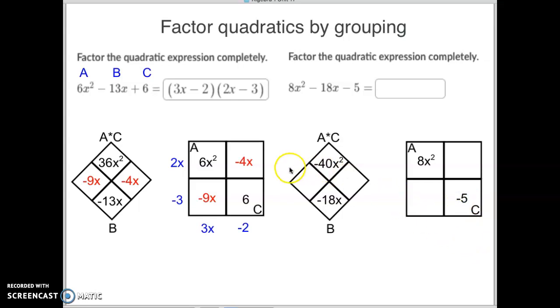Now we need to think of two numbers that multiply to negative 40x squared but add to negative 18x. After thinking for a while, you might come up with, oh, negative 20x times positive 2x would equal negative 40x, and negative 20x plus 2x would equal negative 18x. Again, this is the part that takes the most thinking right there. And you're probably going to want to ask me questions from time to time. How do I get there? Well, I'm happy to help you.